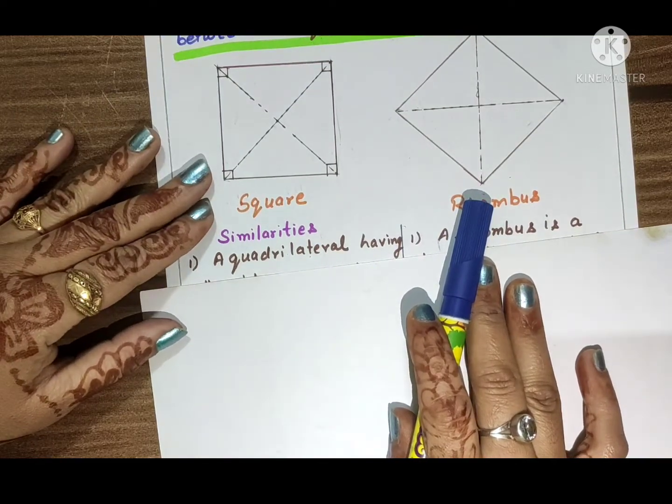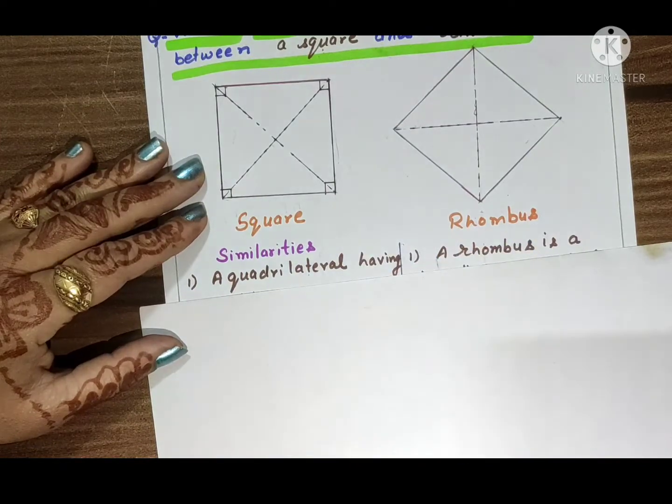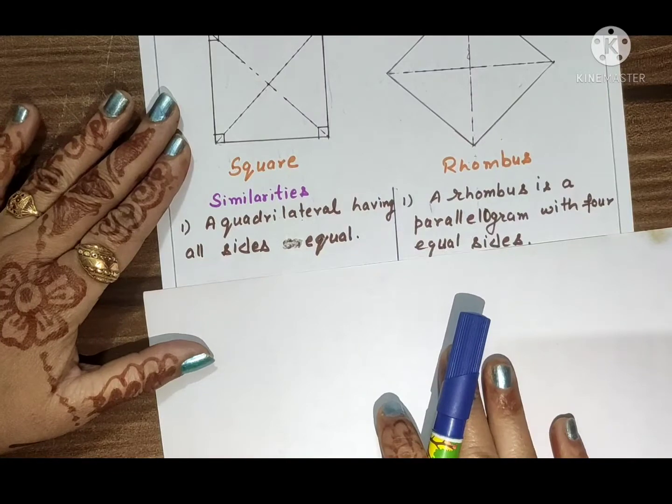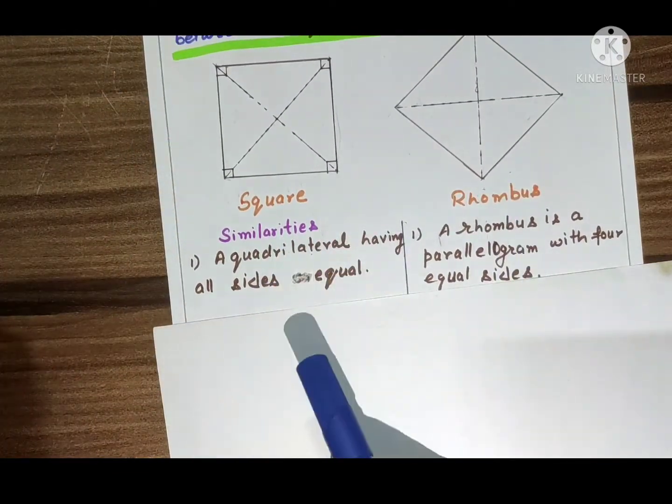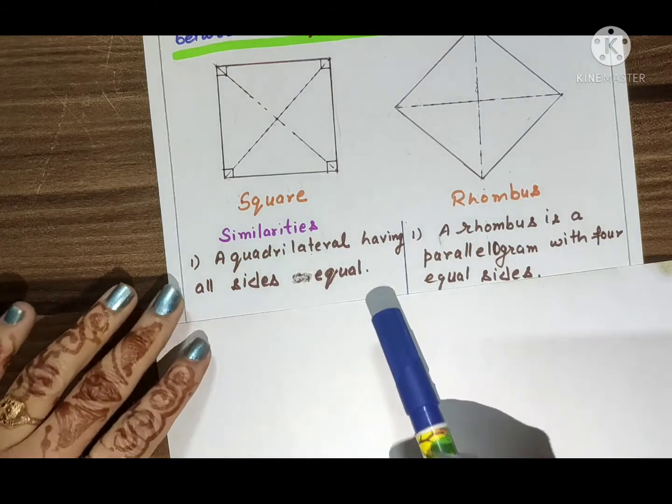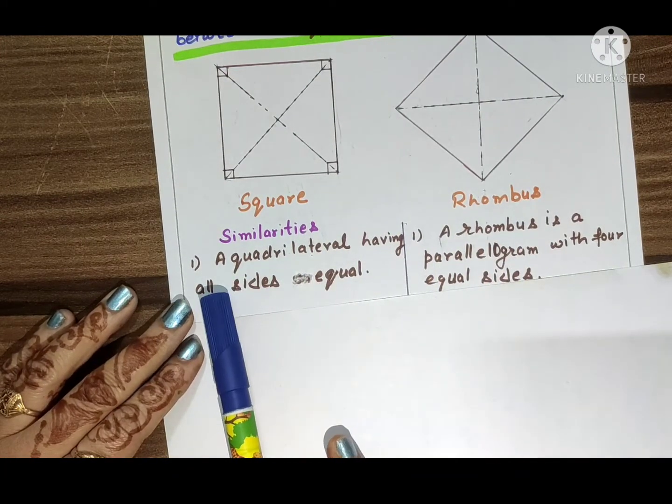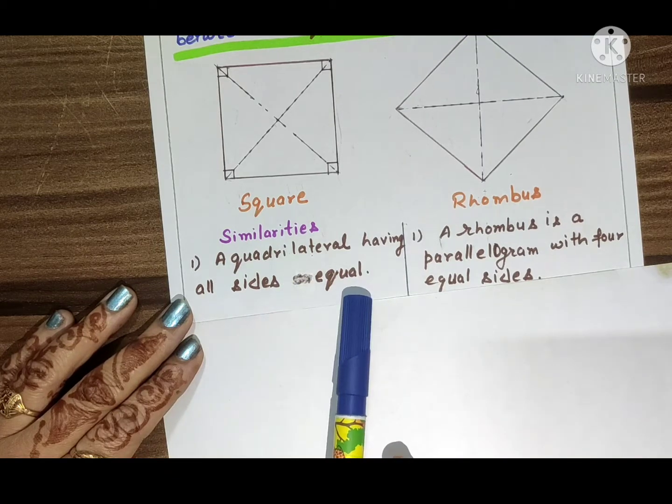Similarities - first point, we will see the definitions. First, a square is a quadrilateral having all sides equal.